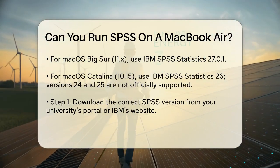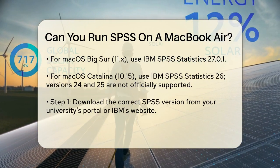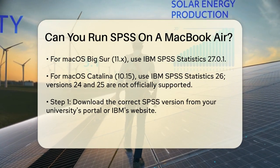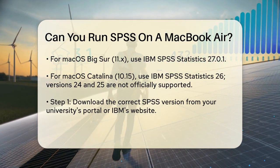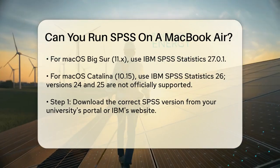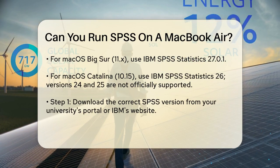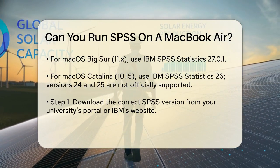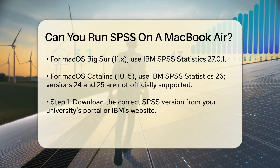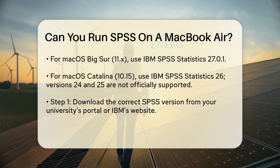Here's a step-by-step guide to help you install SPSS on your MacBook Air. Step 1: Download the correct version — make sure to download the SPSS version that matches your macOS. You can find these downloads through your university's software portal or the official IBM website. Step 2: Uninstall previous versions — if you have an older version of SPSS installed, uninstall it before proceeding.